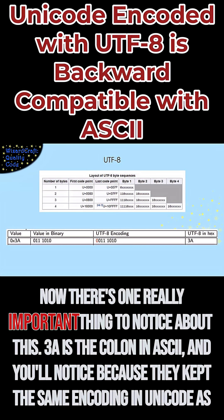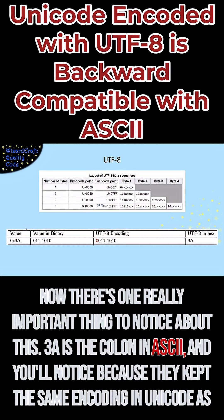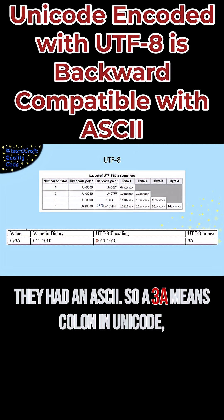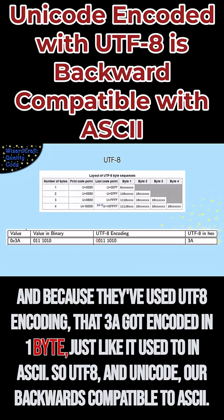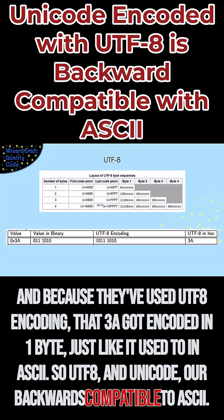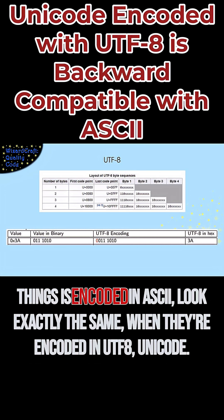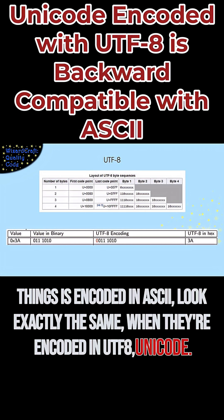There's one really important thing to notice about this. 3A is the colon in ASCII, and you'll notice because they kept the same encoding in Unicode as they had in ASCII, so 3A means colon in Unicode. And because they have used UTF-8 encoding, that 3A got encoded in one byte, just like it used to in ASCII. So UTF-8 and Unicode are backwards compatible to ASCII. Things encoded in ASCII look exactly the same when they are encoded in UTF-8 Unicode.